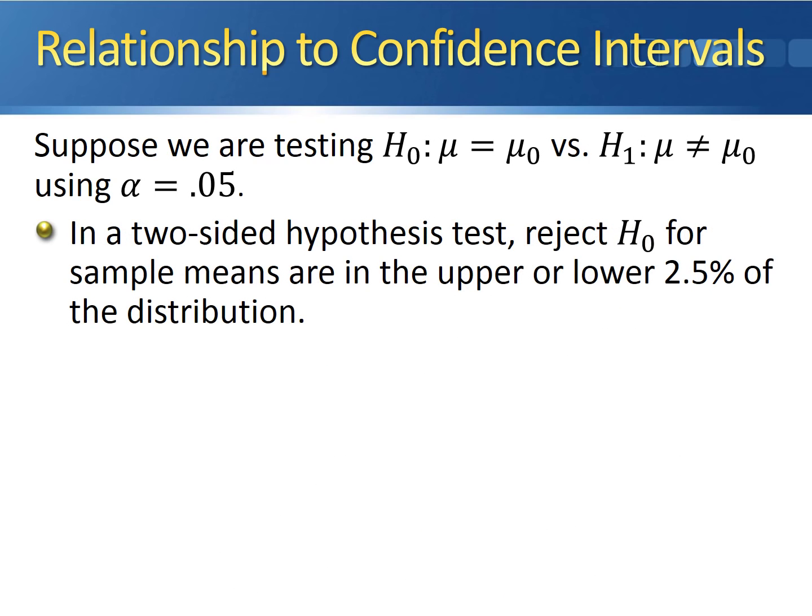In a two-sided hypothesis test at the 5% level of significance, we're going to reject the null hypothesis whenever the sample mean is in the upper or the lower 2.5% of the distribution.